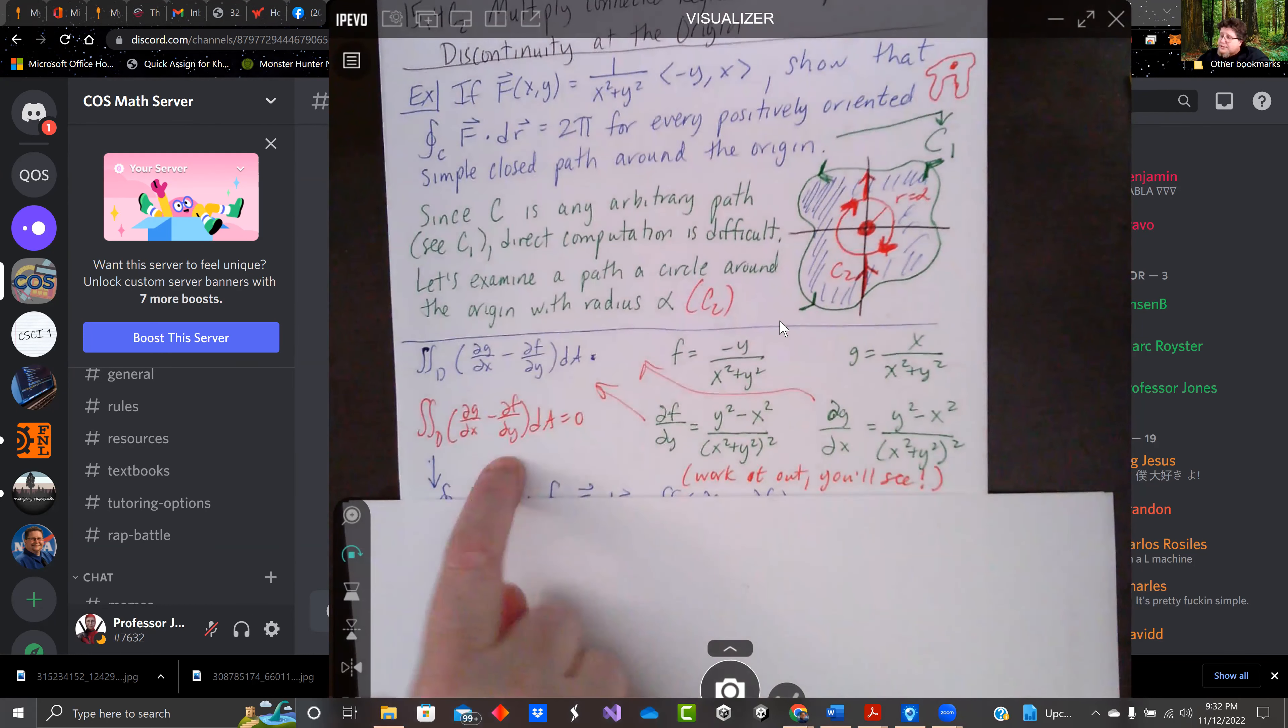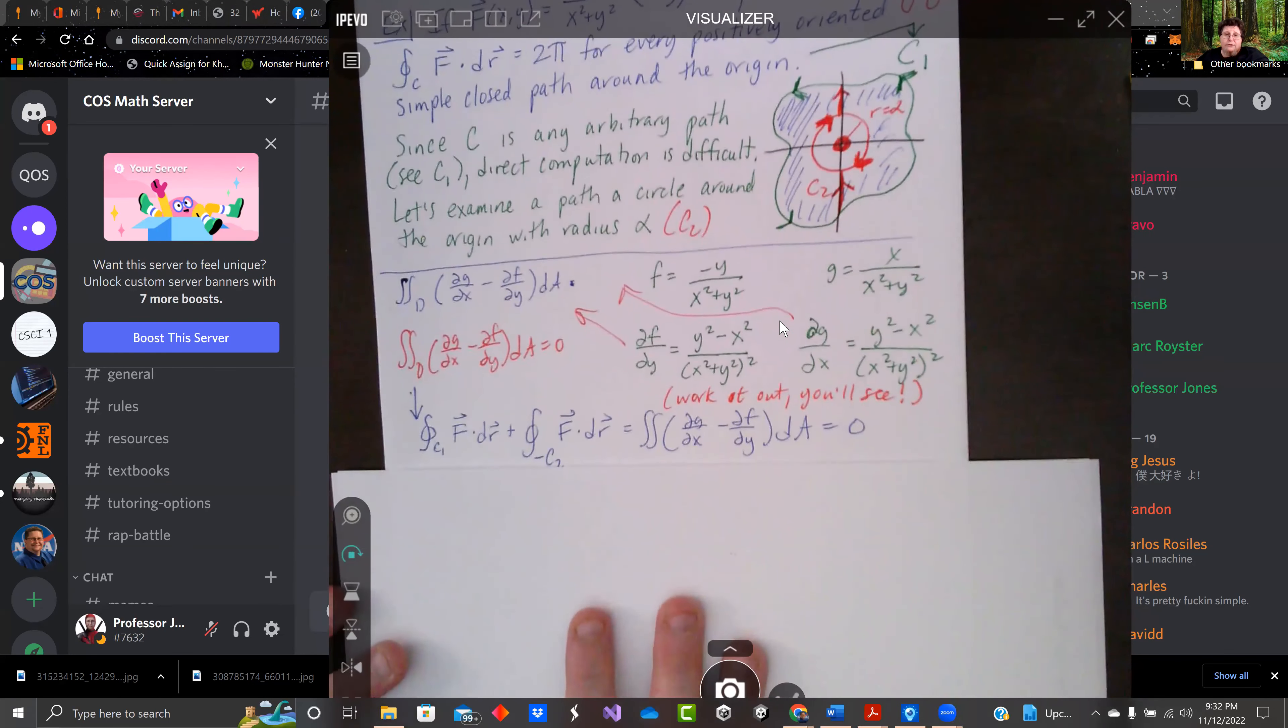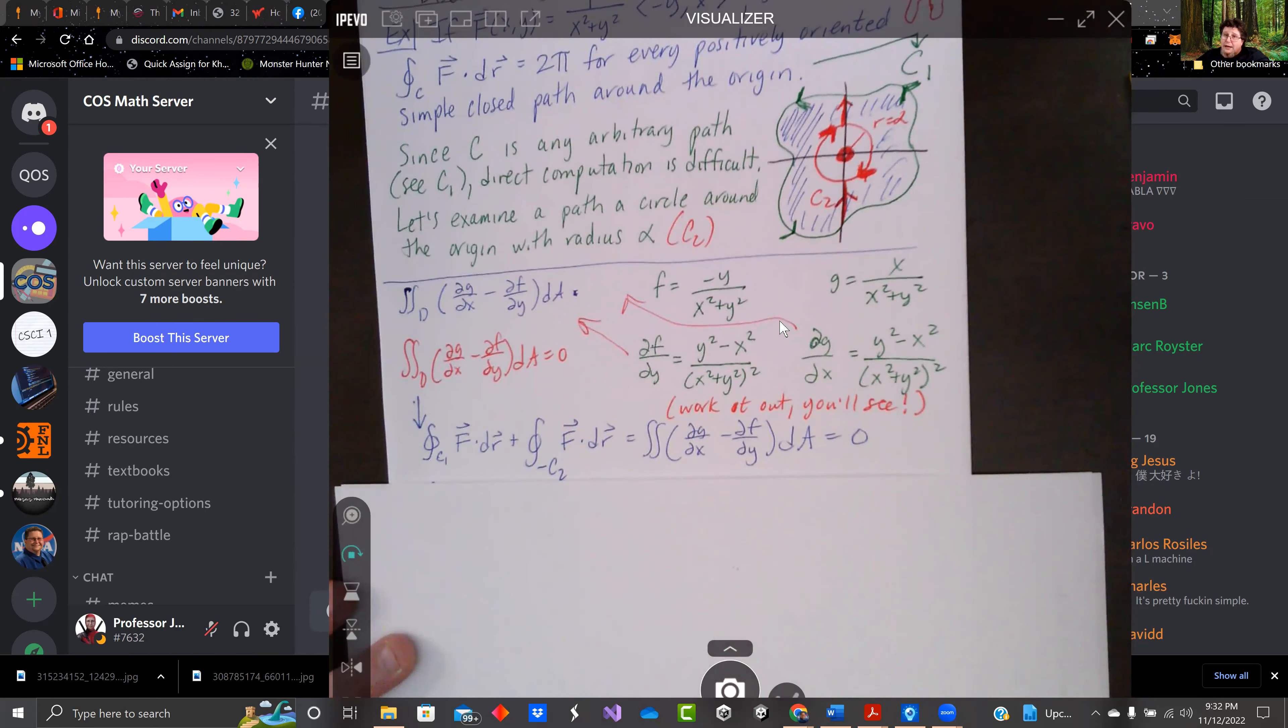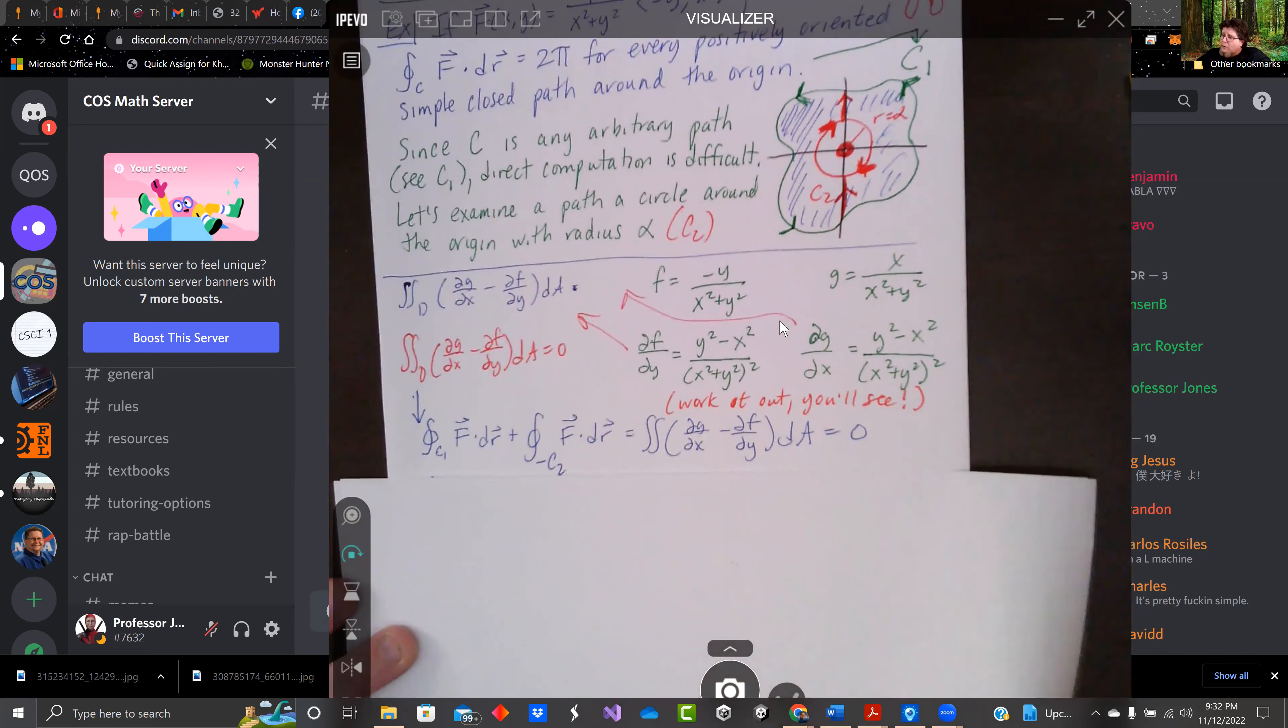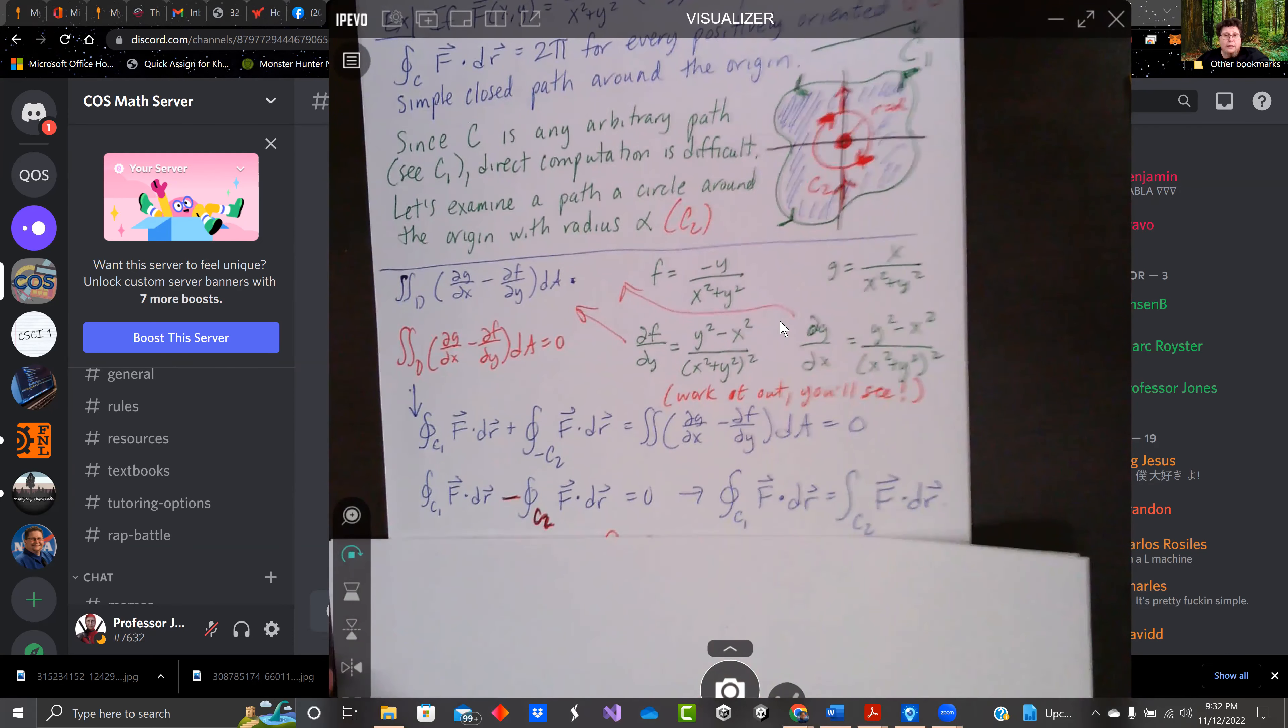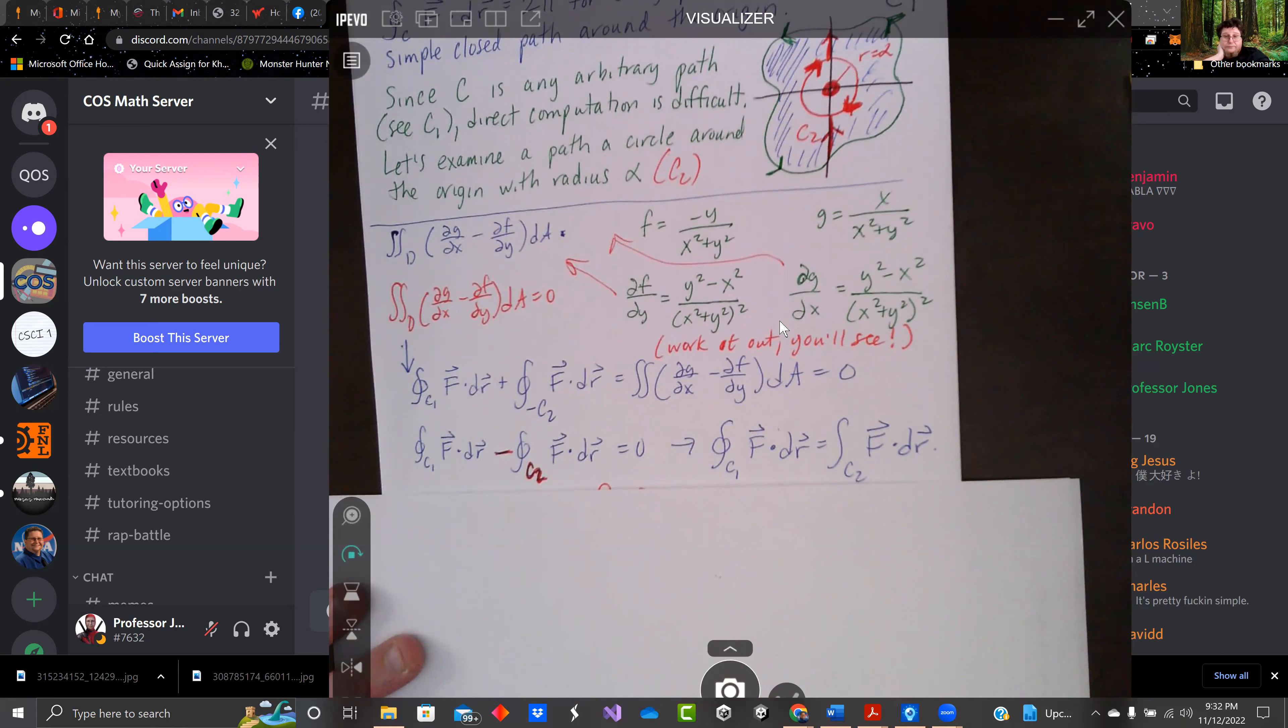We know that this equals zero, and it also equals the closed integral around c1 and negative c2, because c2 is going the wrong way. And that's going to equal our dg/dx minus df/dy da equals zero. We don't like negative c2 going the wrong way, so we will change it. So we're going to use the positive c2 and introduce the negative sign.